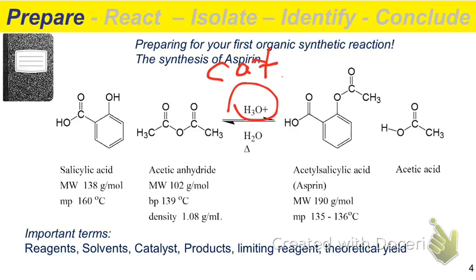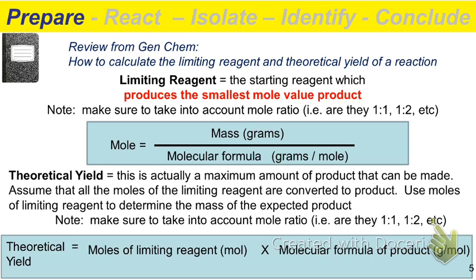How important is the presence of that catalyst — is it necessary to produce the product? No. It makes the reaction go faster, but it's not necessary. So if we were going to calculate a theoretical yield or limiting reagent, should we be concerned about the concentration of the catalyst? No — it's not directly relevant to producing product, so we won't worry about calculating it as a limiting reagent.